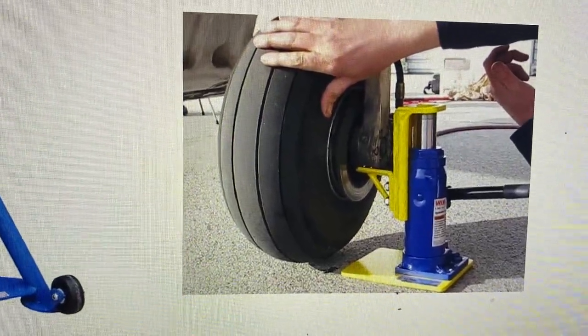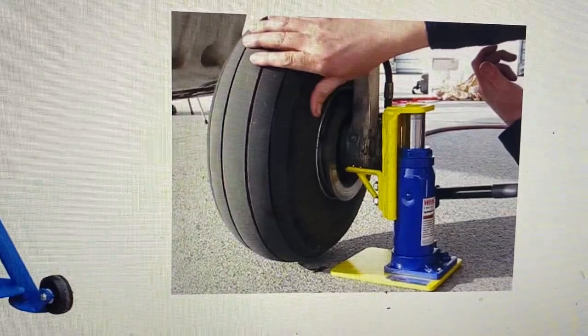So that way, when you jack one tire, the aircraft doesn't roll on you. So make sure you chalk the other tires.